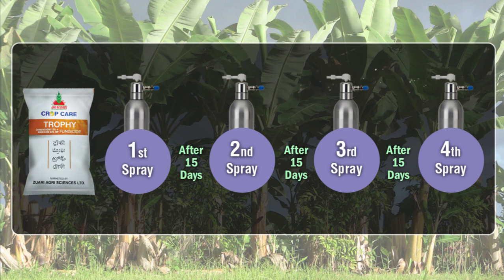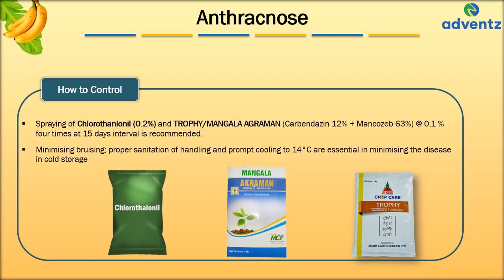Minimizing bruising, proper sanitation of handling, and prompt cooling at 14 degrees Celsius are also essential in minimizing the disease in cold storage. The fourth important disease is Cigar End-Tip Rot.